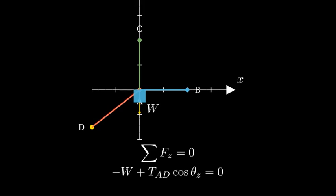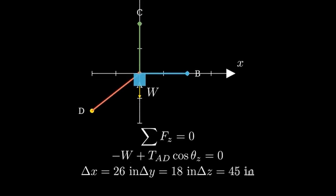For cable AD, we need to find its direction cosine with respect to the vertical axis. The cable has these dimensions: 26 inches in X, 18 inches in Y, and 45 inches in Z.